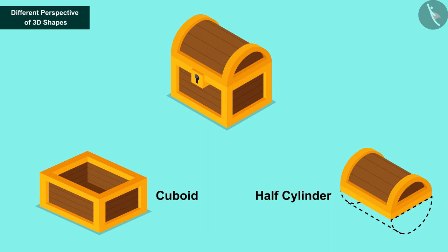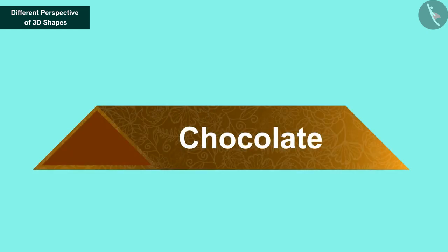That's why Maya's jewelry box is made of a combination of cuboid and half cylinder. Let us now see another example.